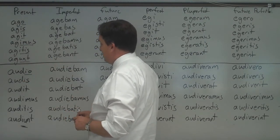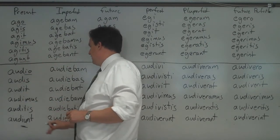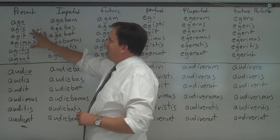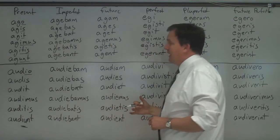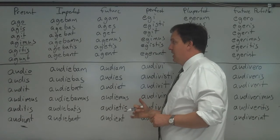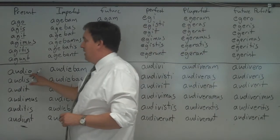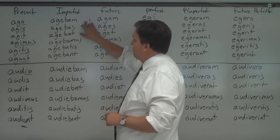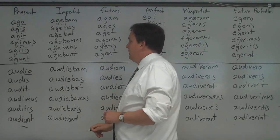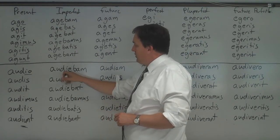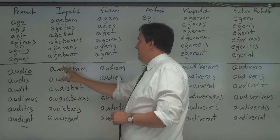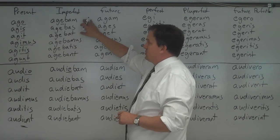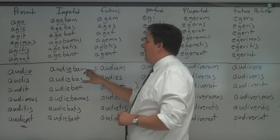Sometimes the present gets confused with the perfect, because both have an I — so watch out with that. The imperfect still uses -bam, -bas, -bat. For the third, the vowel is E: agibam, agibas. For the fourth and third-IO, it's IE between the stem and ending: audiebam, audiebas. The translation would be: I was driving, I used to drive, or I was hearing, I used to hear.